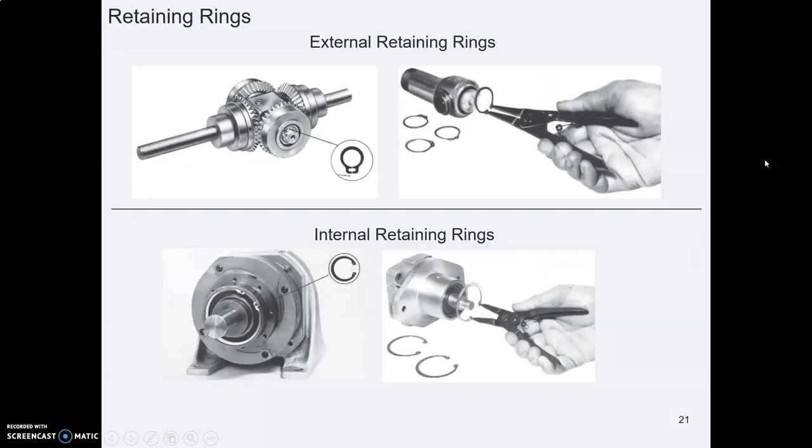Final kind of fastener we'll talk about is the retaining ring and retaining rings can go outside of a shaft an external ring or inside a shaft an internal ring and notice that they have special retaining ring pliers for installing those little springy things.